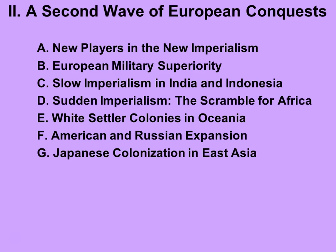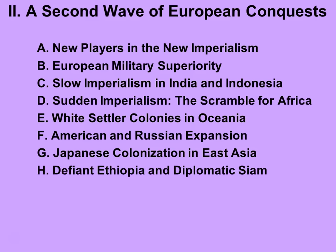In East Asia, a newly industrialized Japan flexed its muscle by annexing the Korean Peninsula and the island of Formosa, now called Taiwan, from China, and the islands of Sakhalin from Russia. Japan then engaged in a style of colonialism similar to the European examples. There were two notable cases of successful resistance to the new imperialism: the East African nation of Ethiopia, which defeated Italy at the 1896 Battle of Adwa, and Siam, presently Thailand, which used diplomacy and accommodation to avoid imperial annexation.